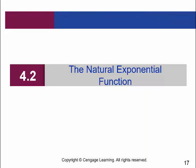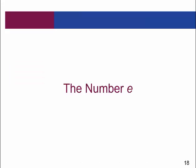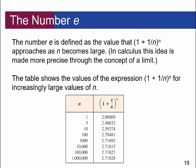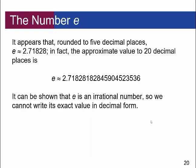Let's talk about something called the natural exponential function. We need to define the number e, which is the value that the expression 1 plus 1 over n, raised to the n, approaches as n becomes large. In calculus this idea is called a limit. As n increases, this value converges to approximately 2.71828. In fact, e to 20 decimal places is shown here. It can be shown that e is an irrational number, so we cannot write its exact value in decimal form.